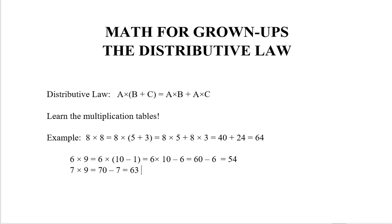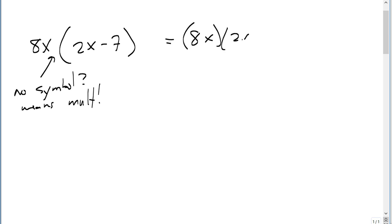So this even works with algebra. You can do something like 8x times 2x minus seven. Remember, no symbol means multiplication. Anyway, and what does this mean? It means 8x times 2x plus 8x times negative seven. And 8x times 2x is 16x squared. And 8 times negative seven is negative 56x.